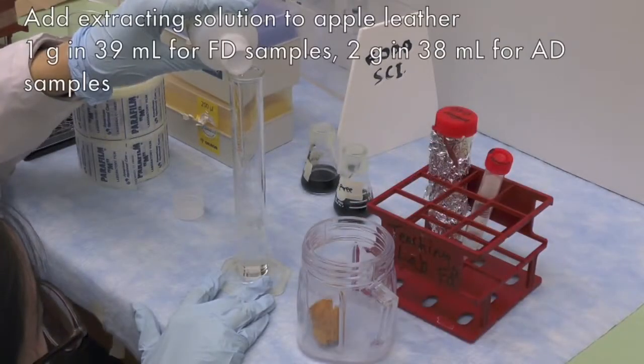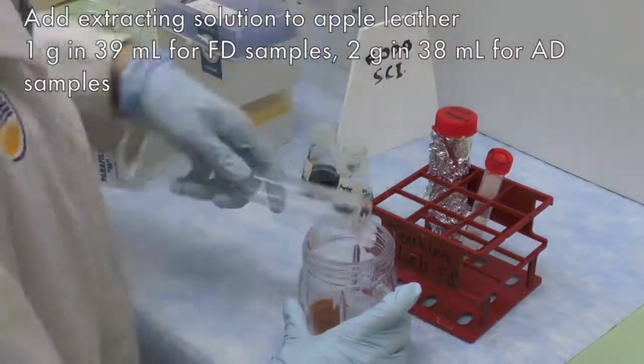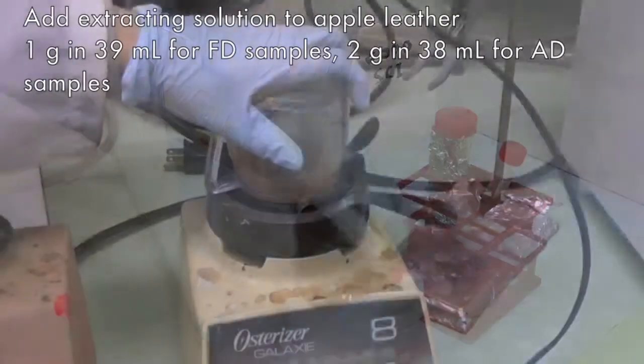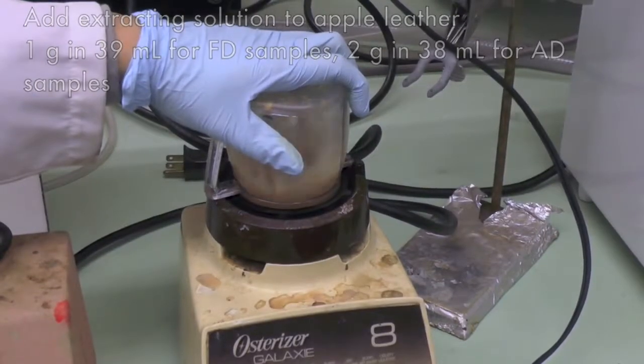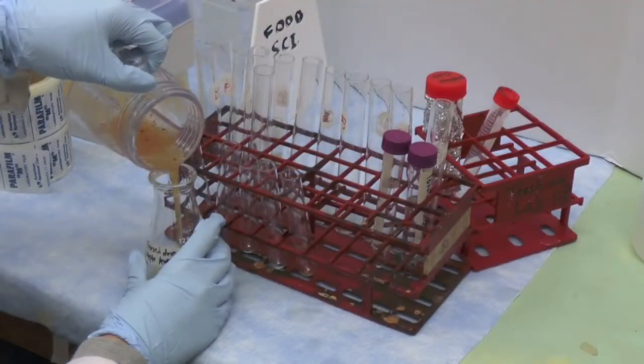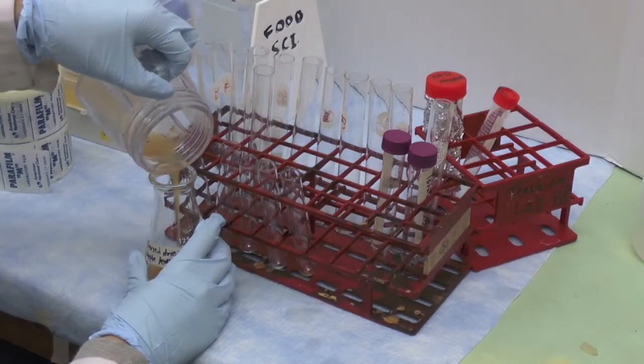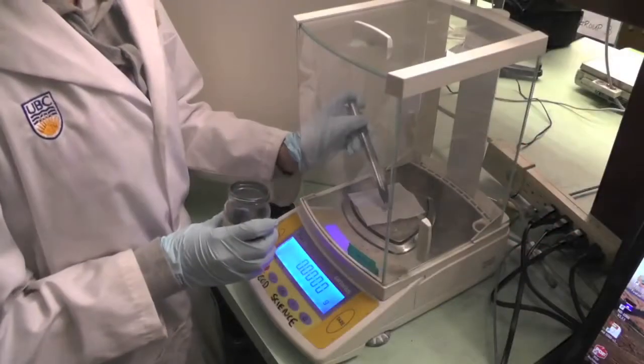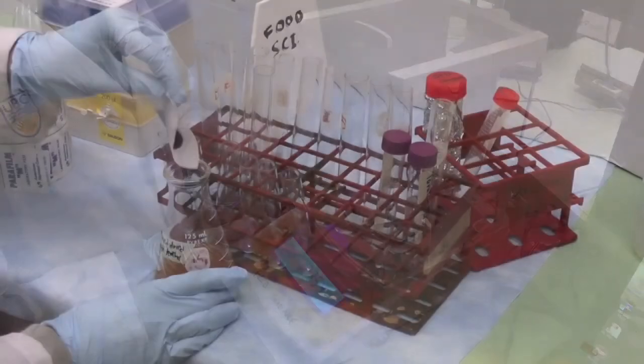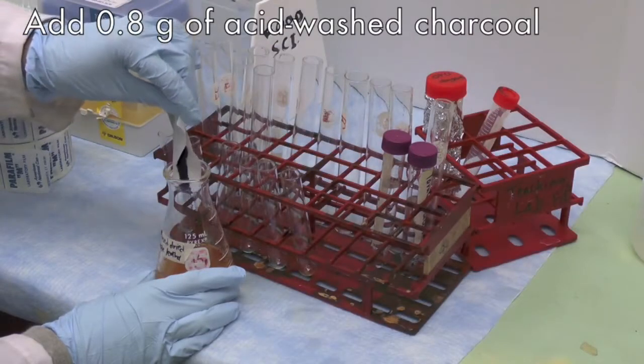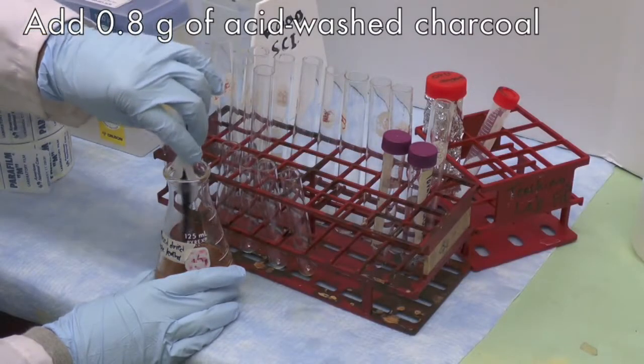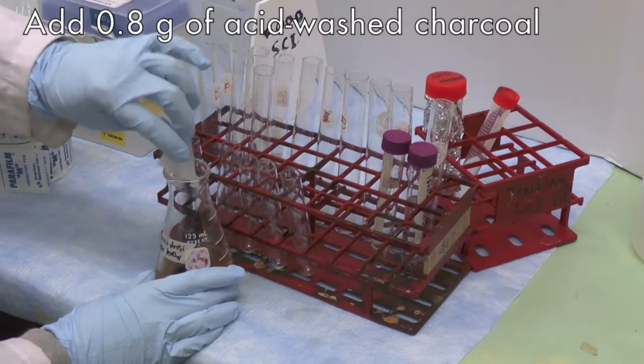For fruit-leather sample, blend the appropriate amount of apple leather and extracting solution into a slurry. Transfer the slurry into a 125 ml Erlenmeyer flask. Weigh 0.8 gram of acid-washed charcoal and transfer to the 125 ml Erlenmeyer flask containing the fruit leather slurry.